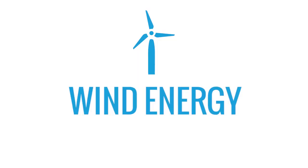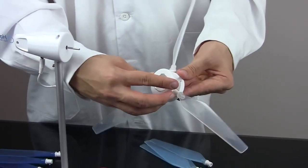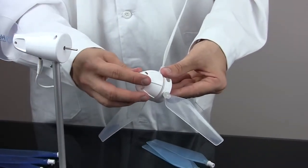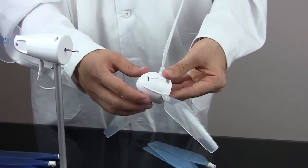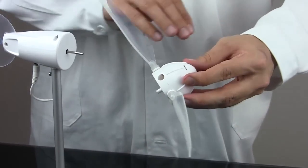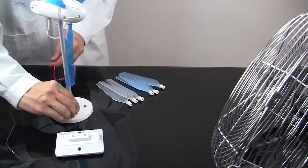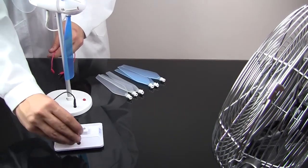The wind turbine allows for experiments with wind energy. Simply choose from one of three included blade types and assemble the rotor. Then attach it to the turbine body. Connect the turbine to the LED lights using the included wires. A standard tabletop fan can provide enough wind to turn the turbine.